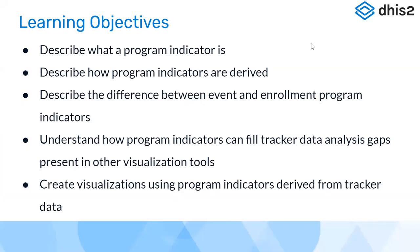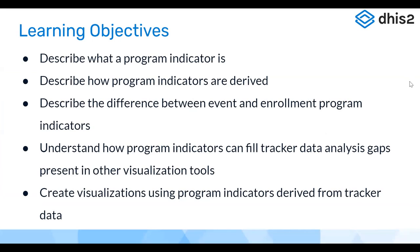This is the structure of the presentation. We'll start with a brief introduction of what program indicators are, how they are derived, what are the two types of program indicators — event and enrollment indicator types — and what is the difference between them. Then we'll understand how program indicators help in tracker data analysis, which cannot be done by other visualization applications like event visualizer and event reports that you learned yesterday.